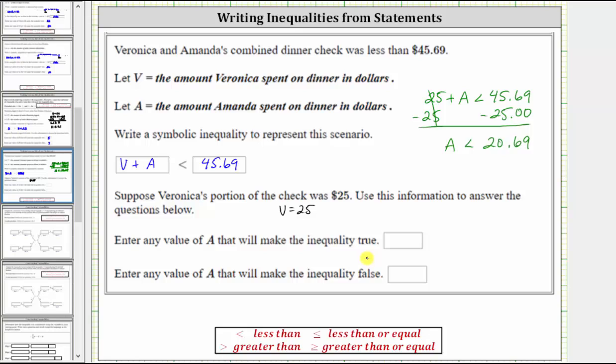Well, again, the inequality is true whenever A is less than 20.69. So we can use any value of A that's less than 20.69, and the inequality will be true. For example, if A is equal to, let's say, 18, the inequality is true, because if we substitute 18 for A, we have 18 less than 20.69, which is true.